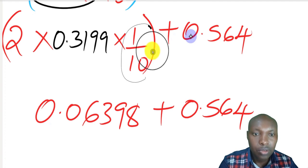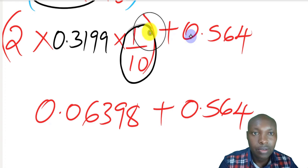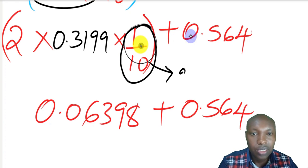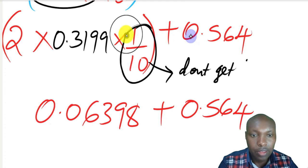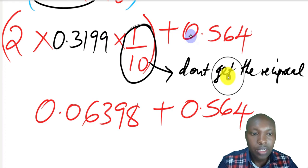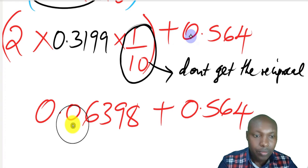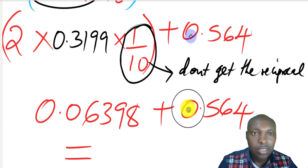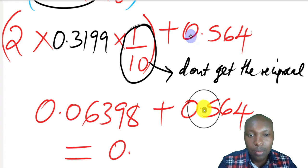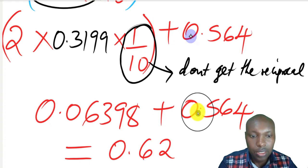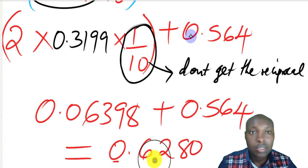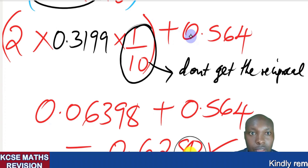To emphasize this part, we don't get the reciprocal of 1 over 10. We just leave it where it is. That was to help us write the number in standard form. We only get the reciprocal of the other number, which is 0.3199. Now what remains is to get the sum of these to get the final answer. When you get the sum, it gives 0.6280. That is simply how you're supposed to solve that question.